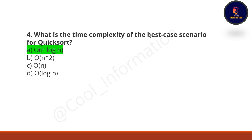Read the question carefully — if the question asks about the time complexity of quicksort without specifying, it means the worst case. In that case the correct option is option B — O(n²), because O(n²) is the time complexity of quicksort in the worst case scenario.